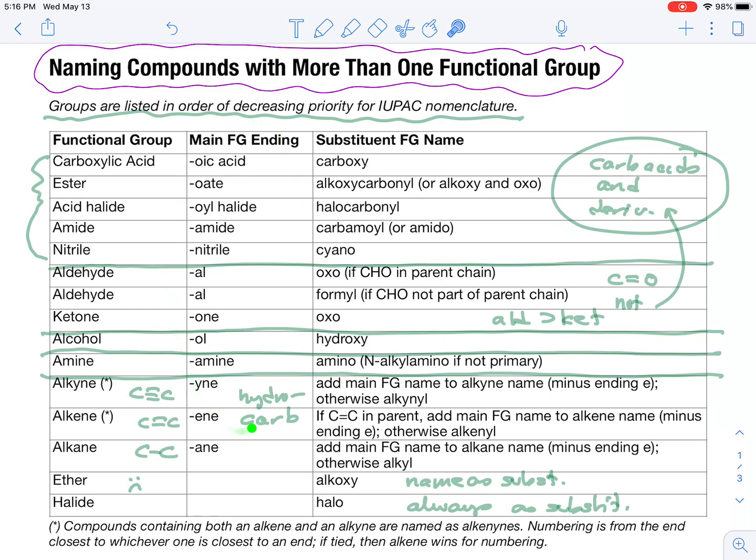First of all, we have the main functional group endings, which you already know, I hope. If you're going to name something as a substituent, so what's going to happen here is you're going to find the main functional group, and that's going to be your parent and your ending or suffix of your name. And then all of your other functional groups are named as substituents. And in order to do that, we need substituent functional group names. And we've met some of these already. We already know, for example, about hydroxy for an alcohol or alkoxy for an ether. Certainly halo, because it's only a substituent, at least if you're naming systematically, but we don't know all of these.